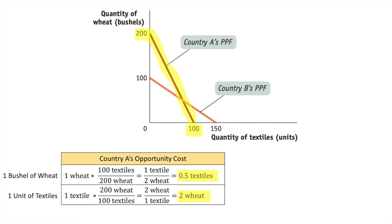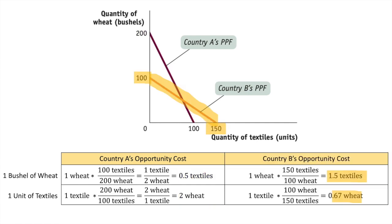In reverse, to produce one unit of textile, country A has to give up 2 bushels of wheat. Now let's find out country B's opportunity cost to produce each good. To produce one bushel of wheat, country B's opportunity cost of textile is 1.5 units. And to produce one unit of textile, country B has to give up half a bushel of wheat.